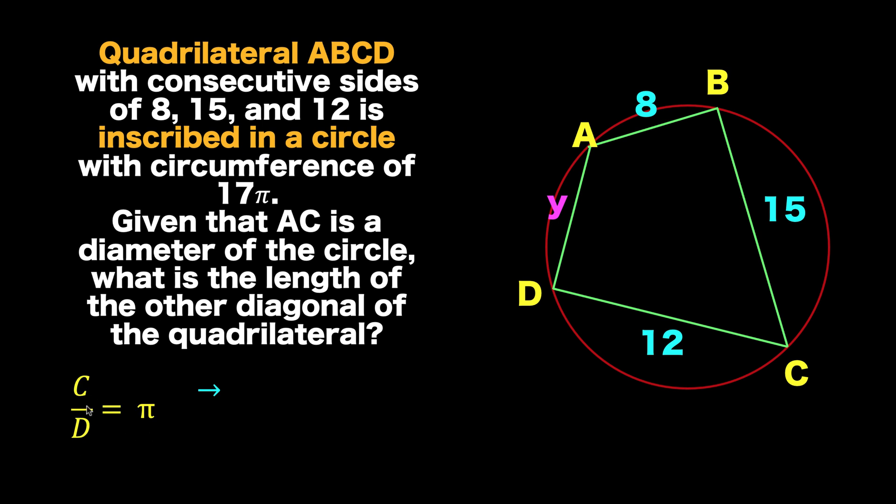Let's recall that the ratio of the circumference over the diameter is equal to pi, or equivalently, the circumference is equal to diameter times pi. And since it is given that the circumference of this red circle is 17 pi, that implies that the diameter is 17.